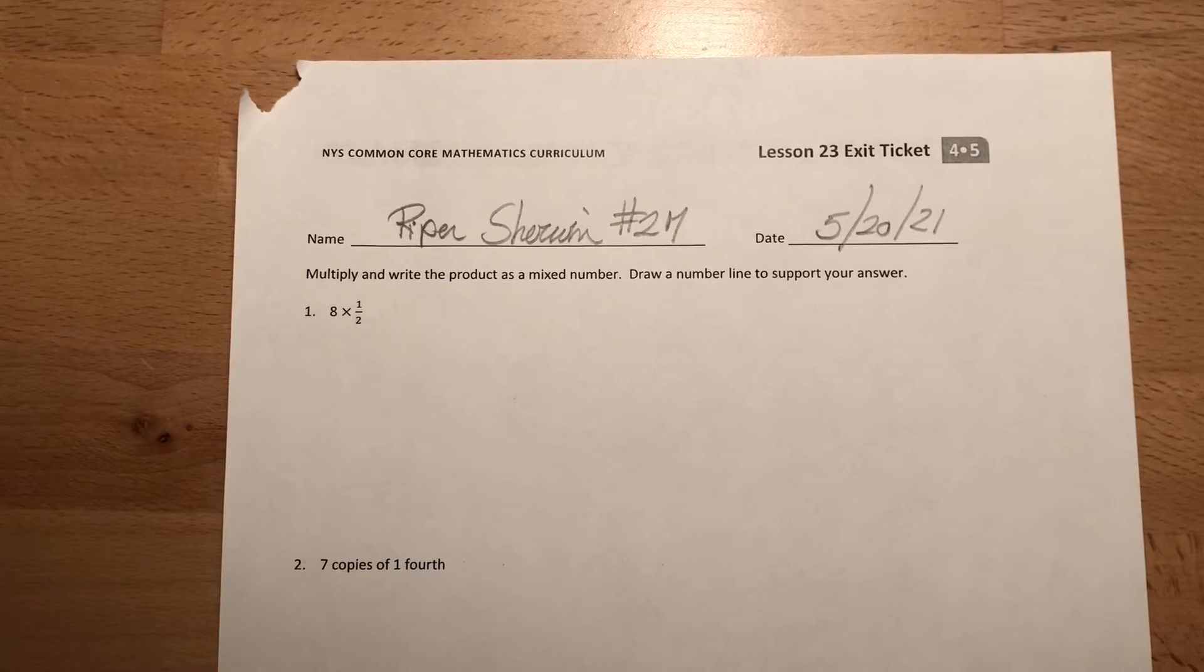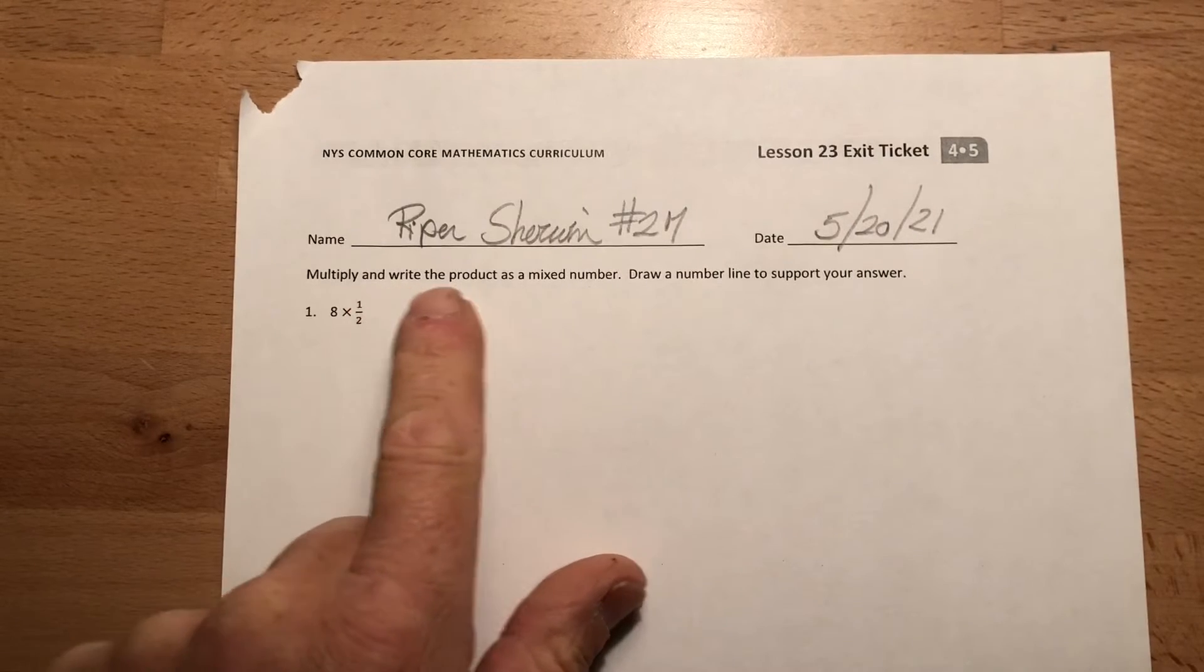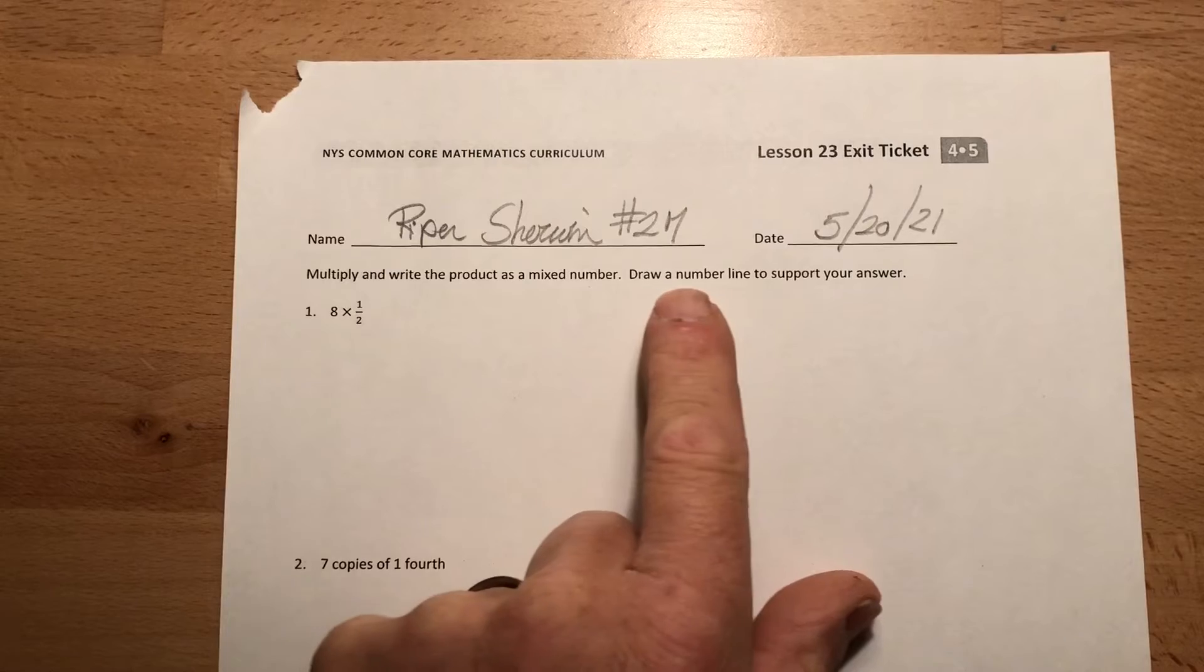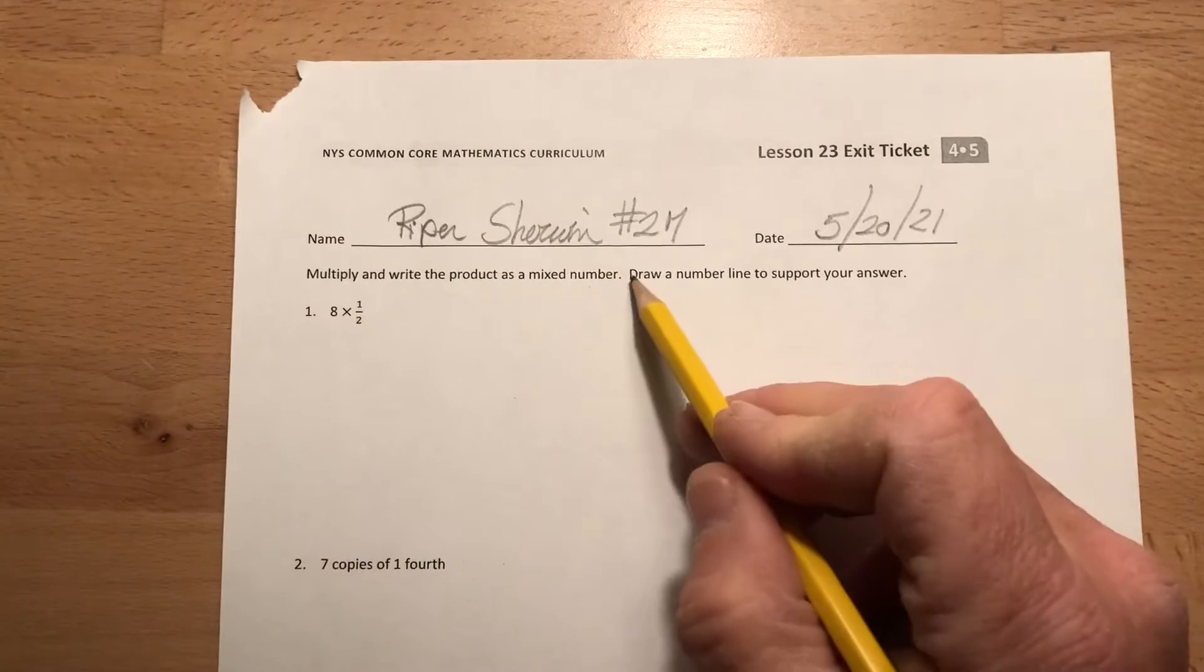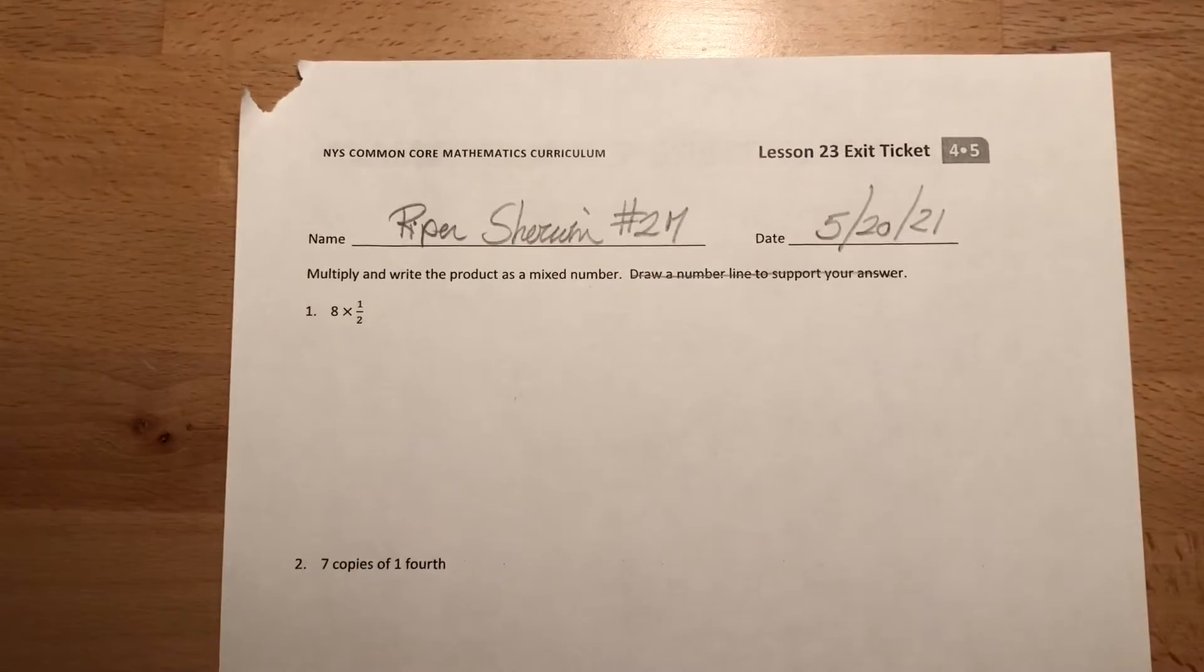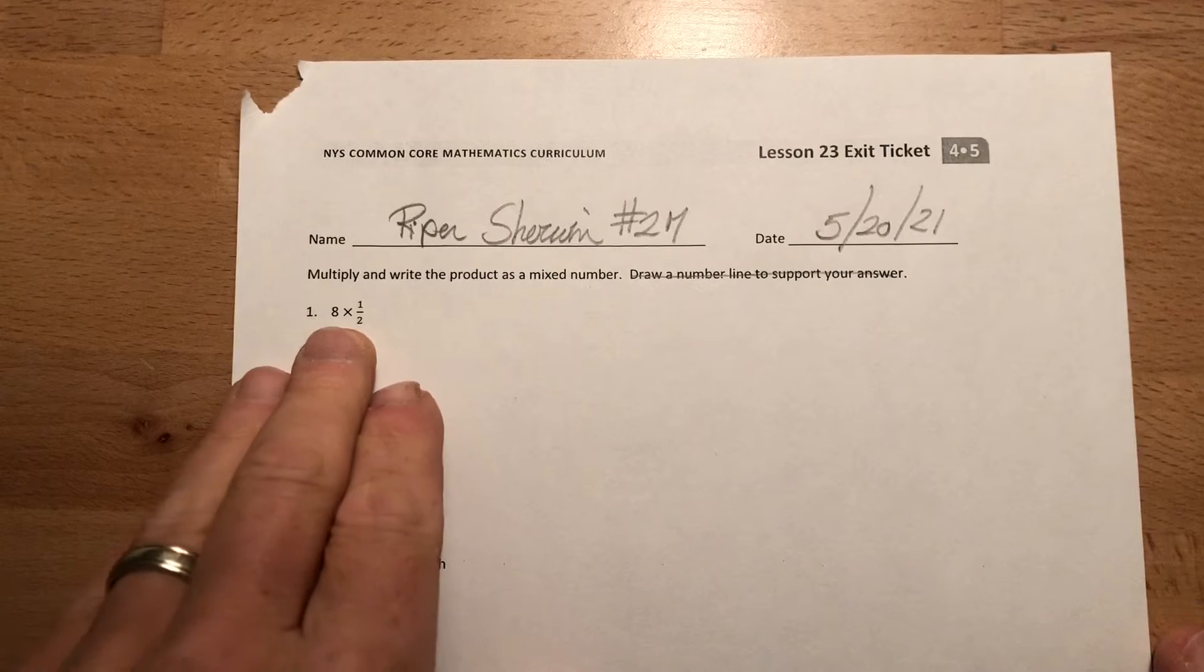So let's take a look at it. Says multiply and write the product as a mixed number, draw a number line to support your answer. We don't have to do that. You can if you want but you don't have to. Okay, so you have eight times one-half.